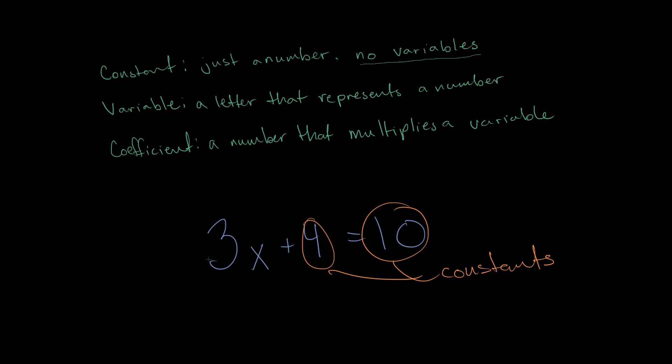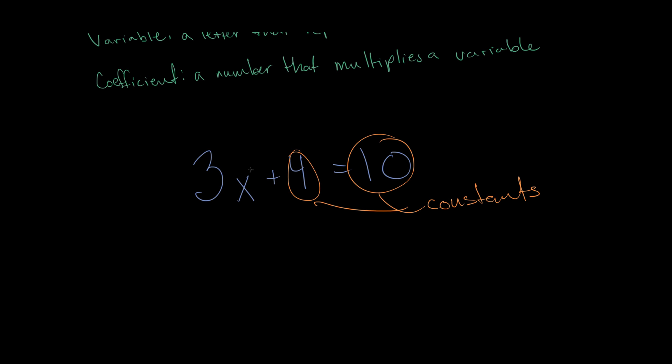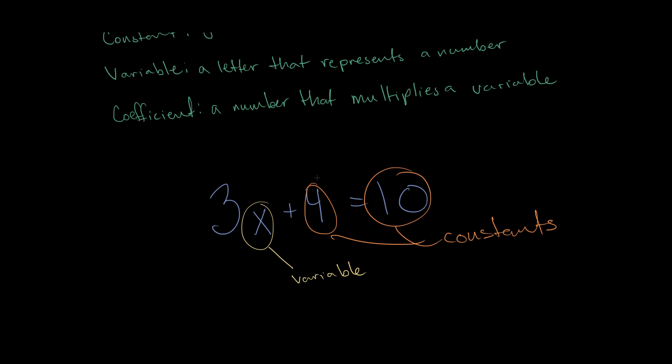Now, coming back to this 3, it is a number, but what is it multiplying? It's multiplying a letter, and what's that letter called? Well, that's just a variable, because it represents a number. So this x, that is a variable. And what do we call a number that multiplies a variable? Well, that's a coefficient. So this 3 is a coefficient.